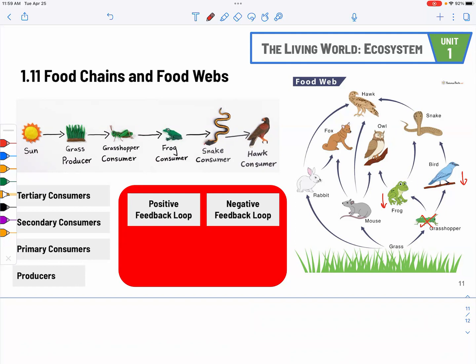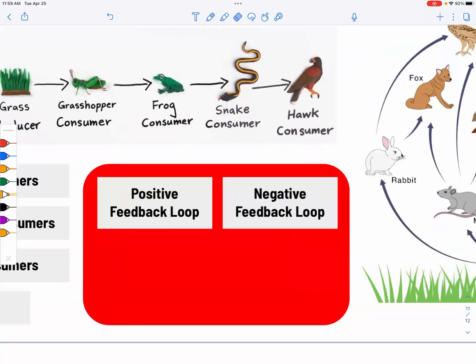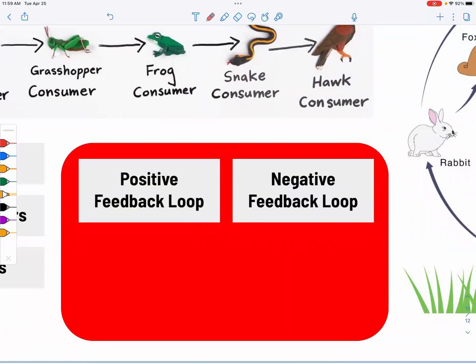This is why it's very important to understand food webs. We also have positive and negative feedback loops. In a positive feedback loop, the output becomes the input again, so the cycle keeps going and grows more vigorous — such as global warming. A warmer ocean leads to melting sea ice, which reflects less solar radiation back to space, making the ocean even warmer.